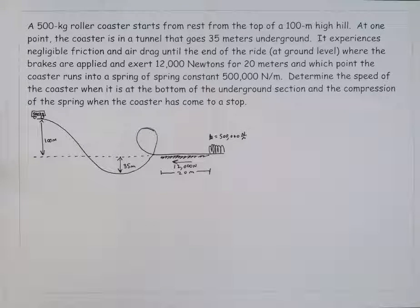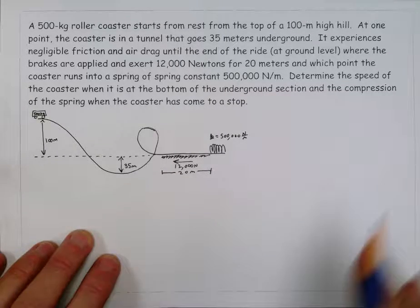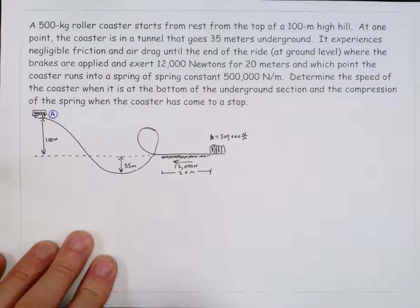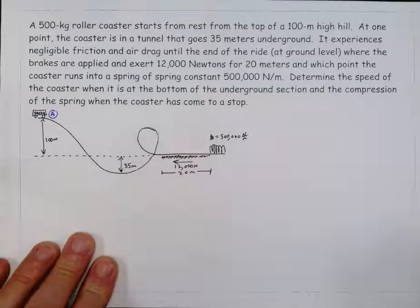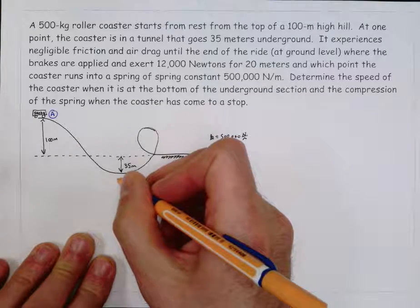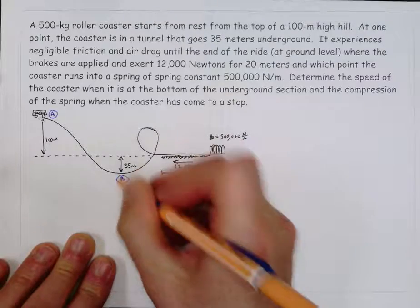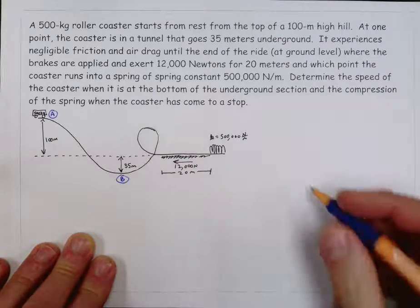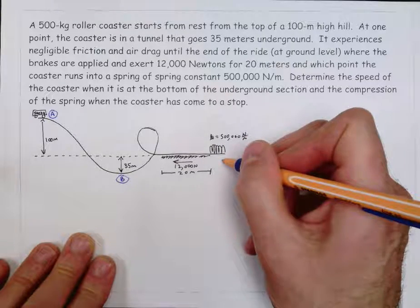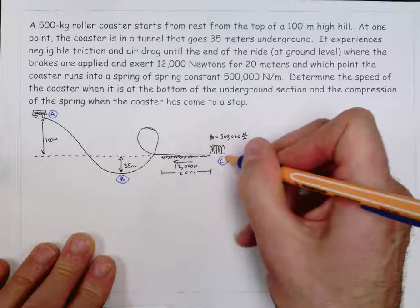Always the important thing is setting up these problems, and the first thing I do is determine important locations in the picture. So one important location, I'm going to call it A, is over here, pretty much the starting point for the roller coaster. And then as you read the question, we're supposed to find out how fast it's going down here, so I'm going to call that B, and also find out how far it compresses the spring when it runs into the spring over here, so I'm going to call that C.